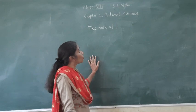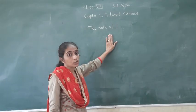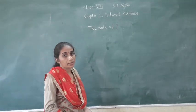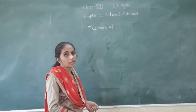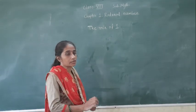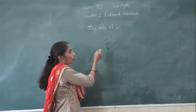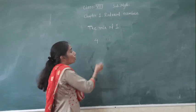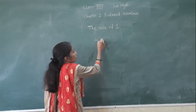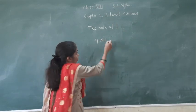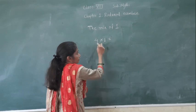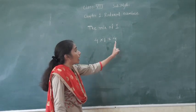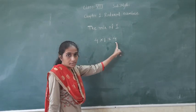Let's see the role of 1. What is the role of 1? If we multiply any number by 1 — suppose if I have taken 4 — 4 multiplied by 1, what will you get? 4. The number itself.